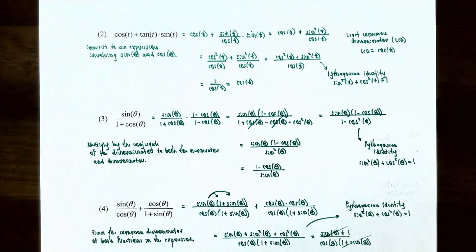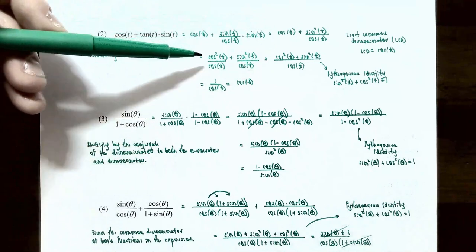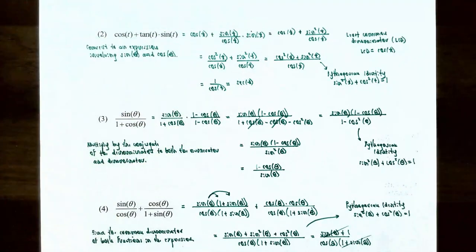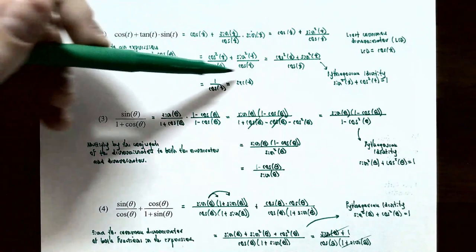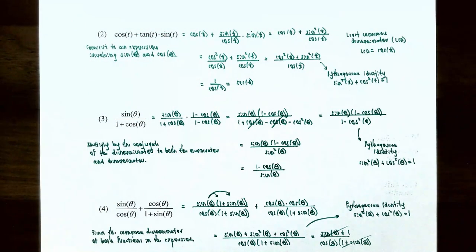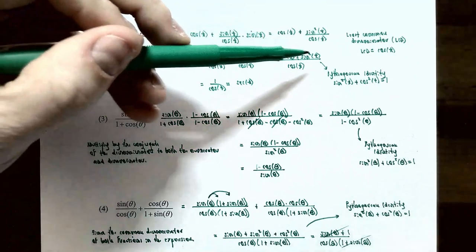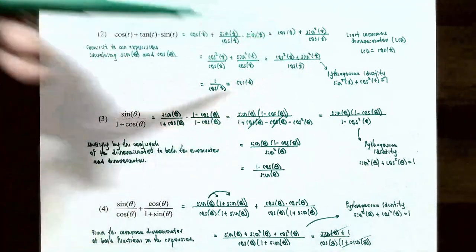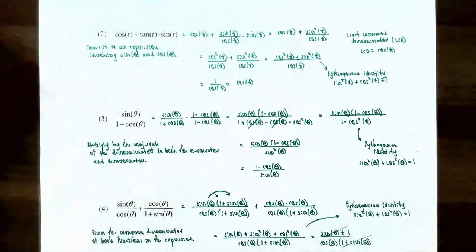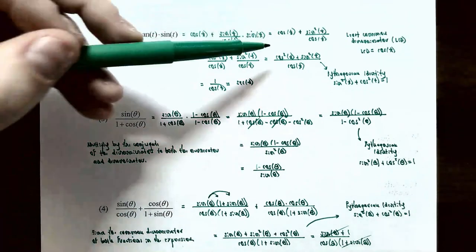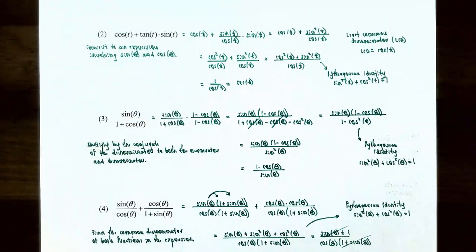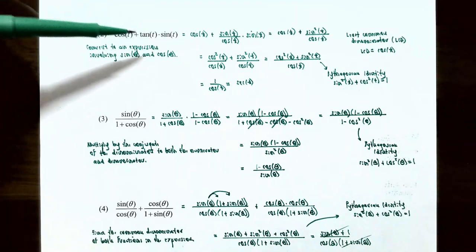Combining the fractions gives cosine squared of t plus sine squared of t in the numerator over cosine of t as the denominator. By the Pythagorean identity, cosine squared of t plus sine squared of t equals 1, so the numerator simplifies to 1. This gives 1 divided by cosine of t, which equals secant of t. So cosine of t plus tangent of t times sine of t simplifies to secant of t.